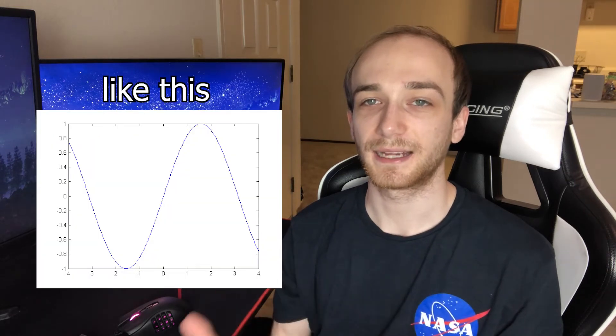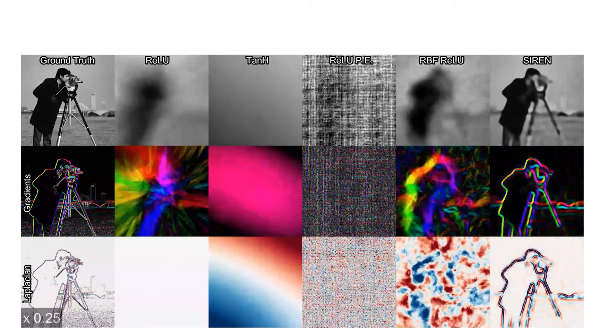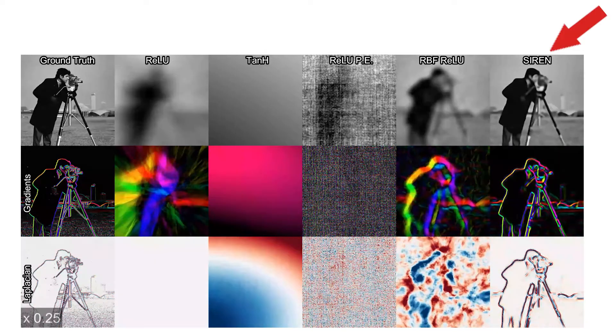Deep Days uses two primary parts to get these super cool results. The first thing that Deep Days does is it uses what's called Siren. Siren is a more recent paper about instead of using activation functions like ReLU and tanh, which you see very commonly, it opts to use sine activation functions, and what that does is it allows it to model these images much better. On screen now you can see an example of Siren over here to the right.